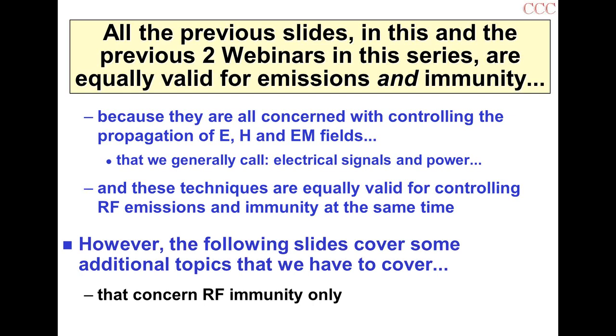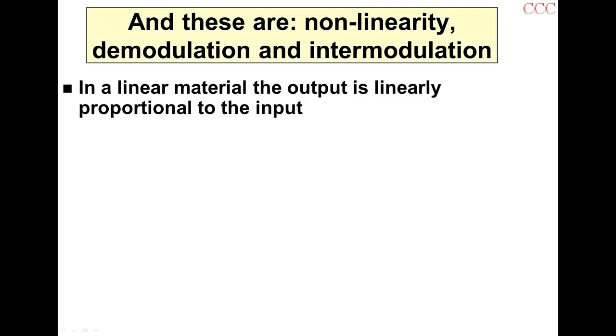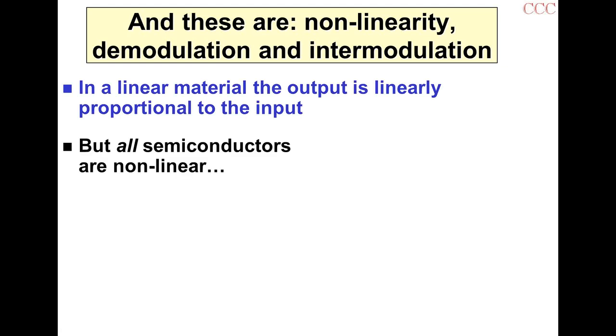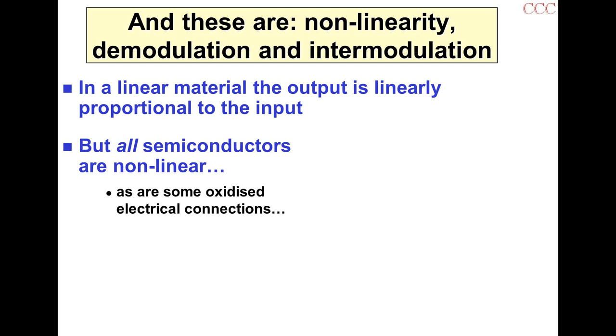Non-linearities give us demodulation and intermodulation. In a linear material like a resistor, the output is linearly proportional to the input. All semiconductors, though, are non-linear — starting with rectifiers and working upwards — and some oxidized electrical connections are non-linear too. This is the so-called rusty bolt effect. Because they're non-linear, they tend to rectify AC signals. RF signals are alternating current, and in a radio receiver this rectification is called demodulation or RF detection — and we want it to happen.